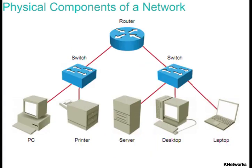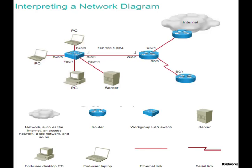There are four major categories of physical components in a computer network: computers, interconnections, switches, and routers. Icons are used to represent the components of a network in a network diagram.